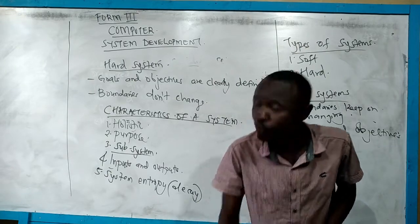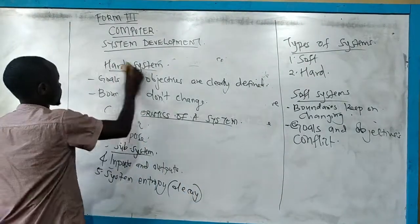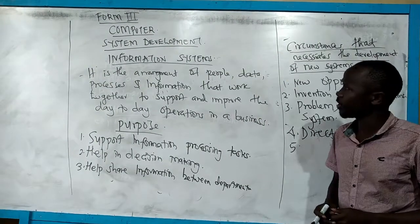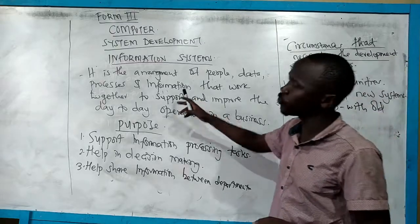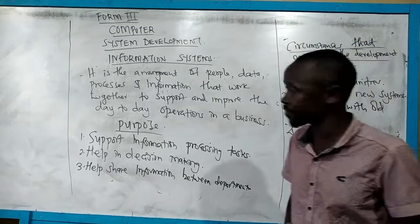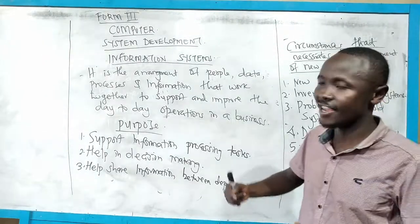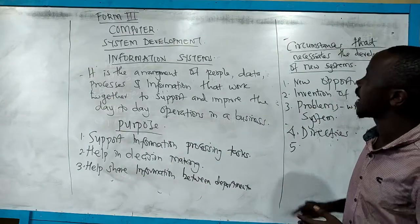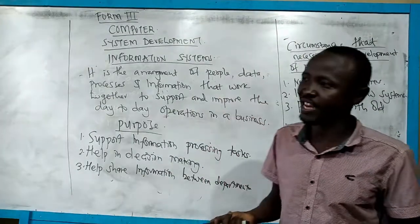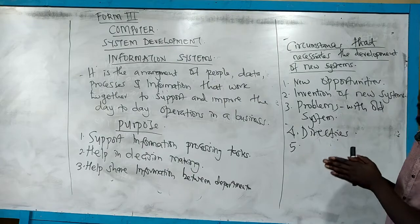Now I want to move to information systems. An information system involves people, data, and processes that will be done with the data. Remember, data is processed to give us information. So an information system is able to support and improve the day-to-day operations — it can be in a business, in an institution, or anywhere else.